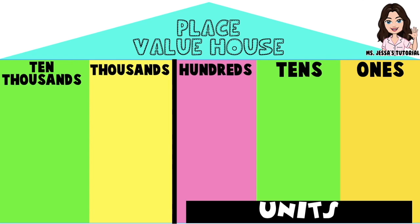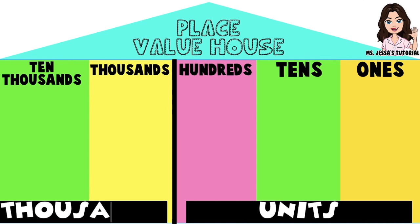In the units period, we have ones place, tens place, and hundreds place. While in the second room, it's what we call the thousands period. In the thousands period, we have the thousands place and the tens thousands place. So these are the place values of a five-digit number. We have more place values higher than this, but for now we are going to focus on a five-digit number.